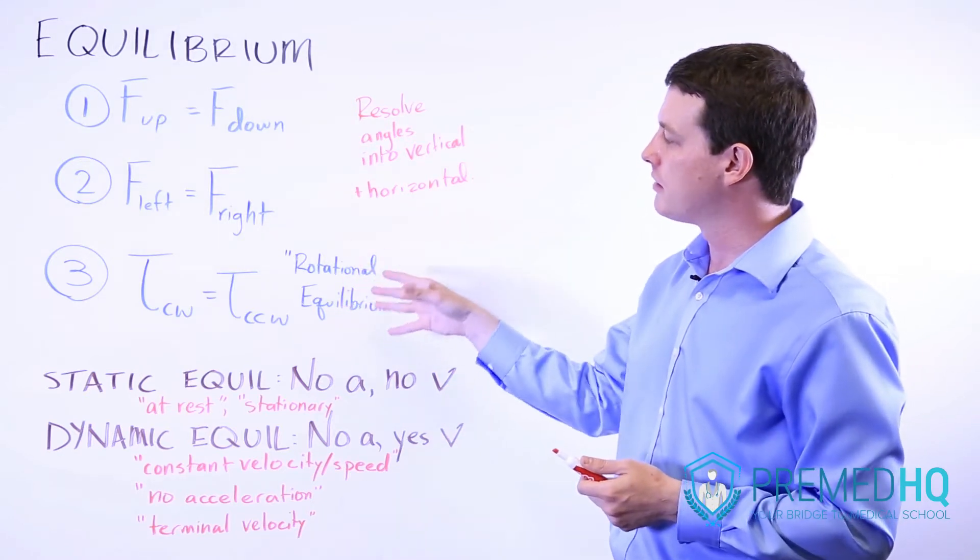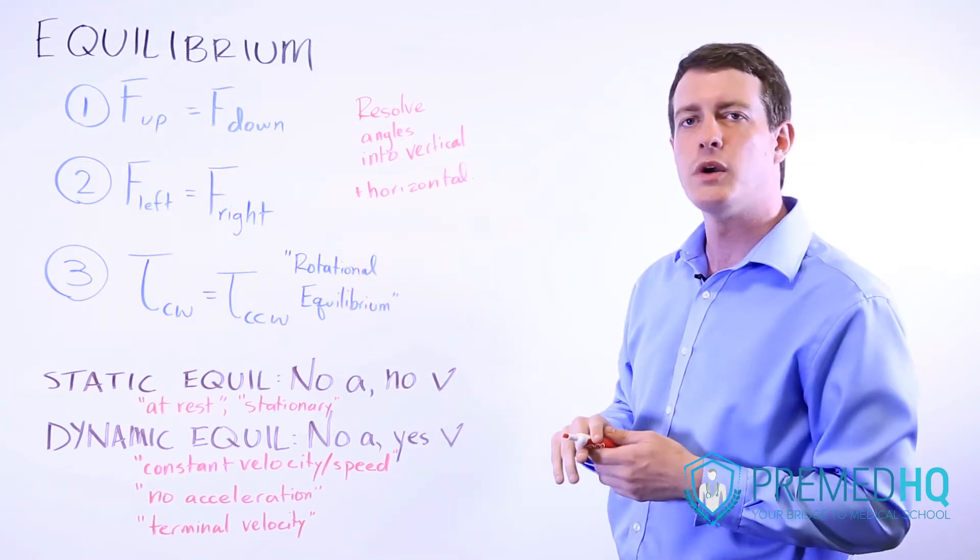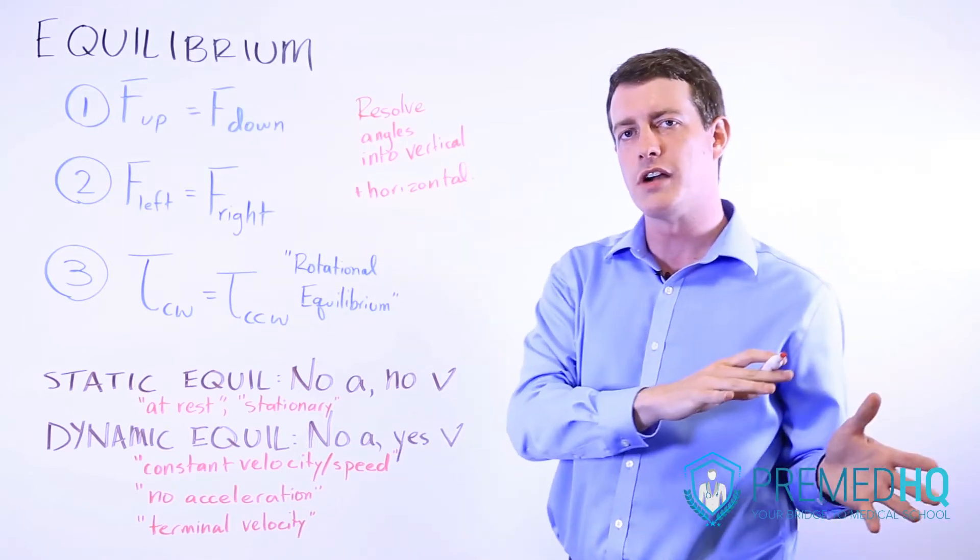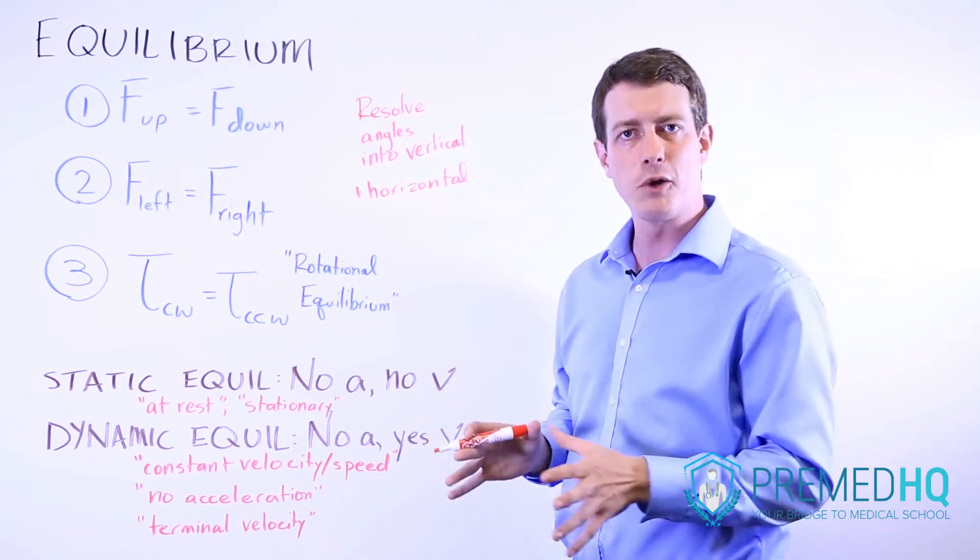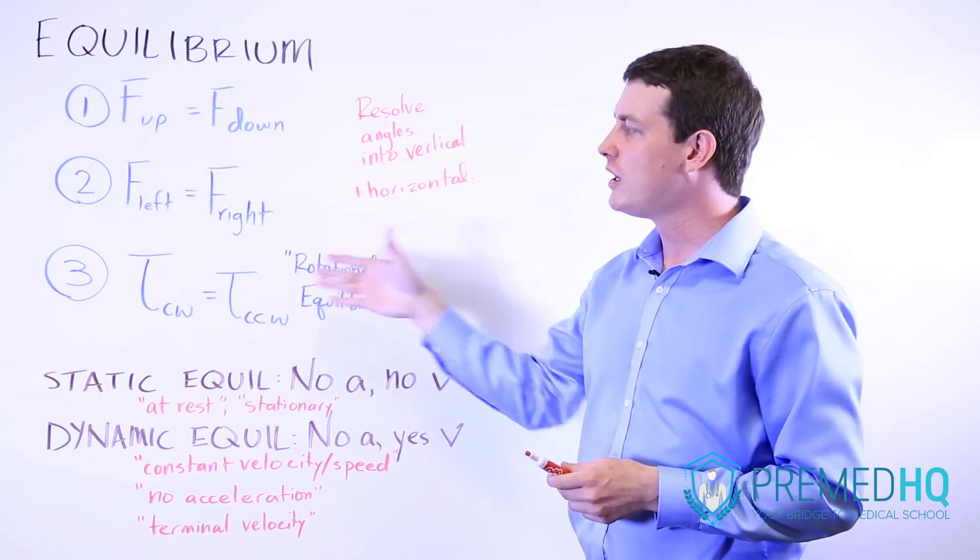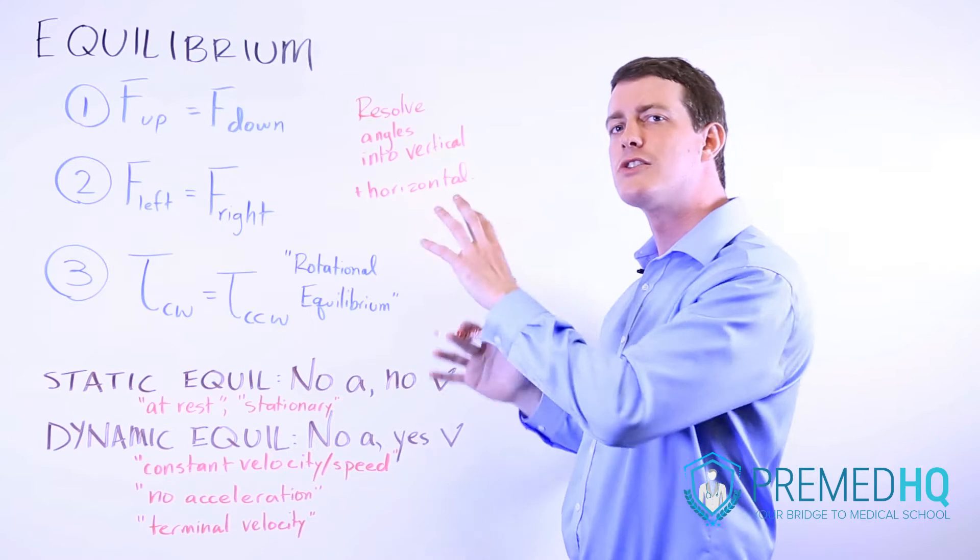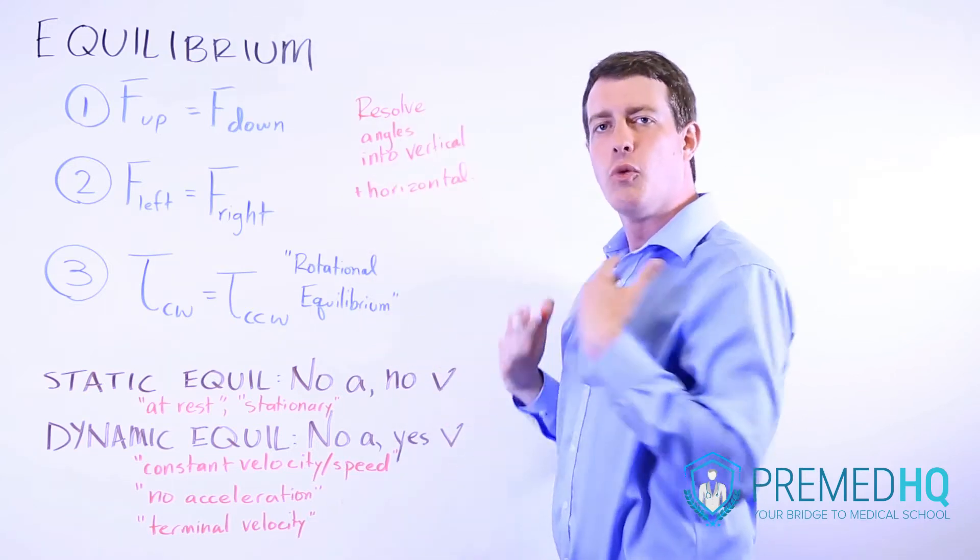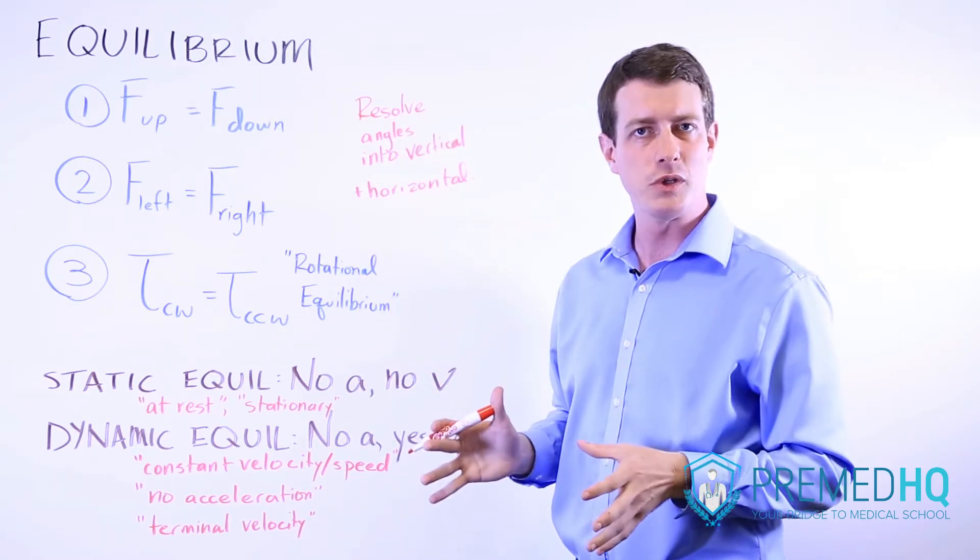The third type of equilibrium is called rotational equilibrium. And that is where your torque in the clockwise direction equals your torque in the counterclockwise direction. Forces are something that we cover in other videos, and torque as well will be covered in separate videos. But these are the things you must consider when you're thinking about a system that's truly in equilibrium.